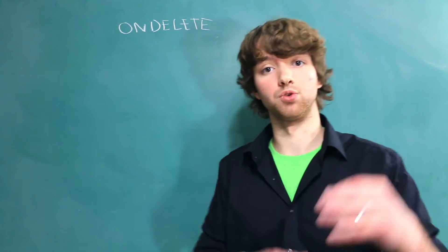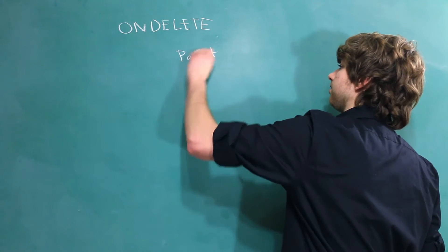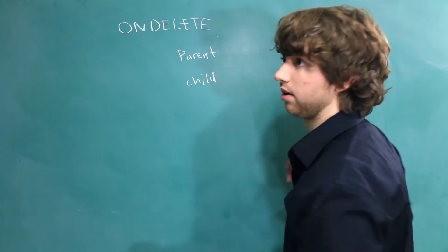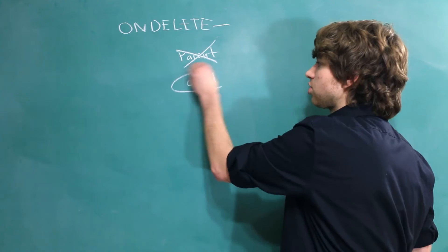We are going to discuss parent and children. So we're going to have a parent row, which is the row being referenced, and then we're going to have a child, which is the row referencing that parent. And we need to discuss what happens when we delete the parent. What happens to the child?